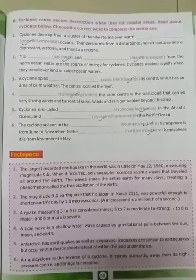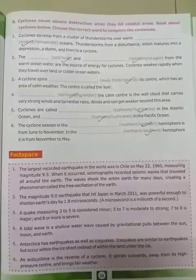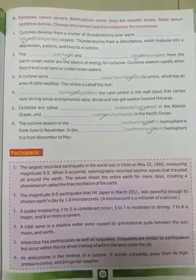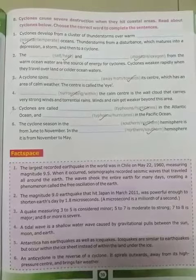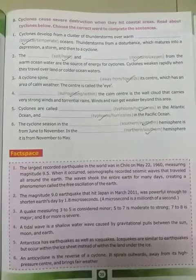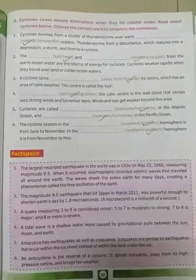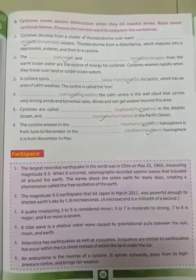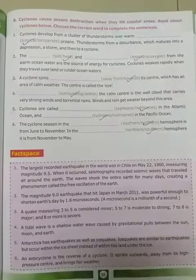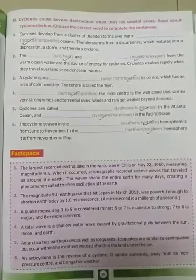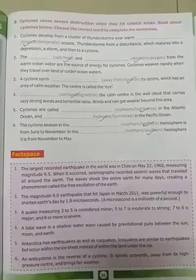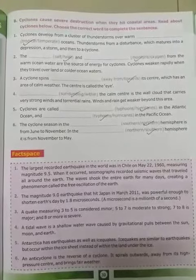The heat and moisture from the warm ocean water are the source of energy for cyclones. Cyclones weaken rapidly when they travel over land or colder ocean waters.